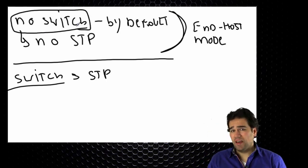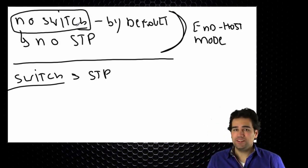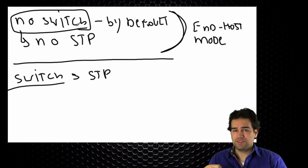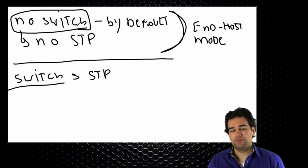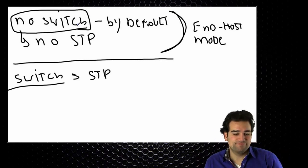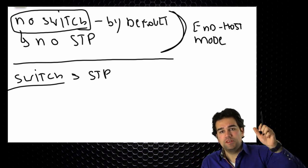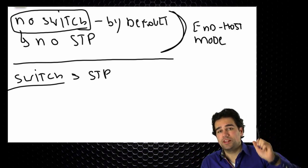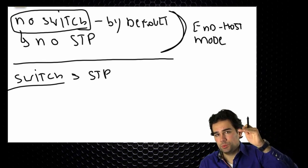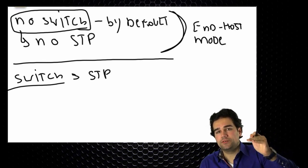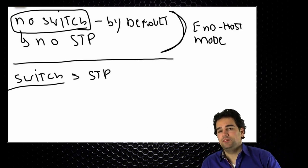Technically, if you do a show spanning tree on it, you will see some spanning tree running, and that's for the management part. But it's not doing anything. My northbound switch will never hear any BPDU coming from the UCS by default, unless I change it.